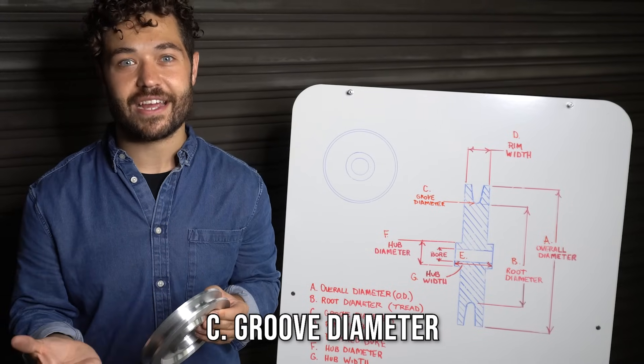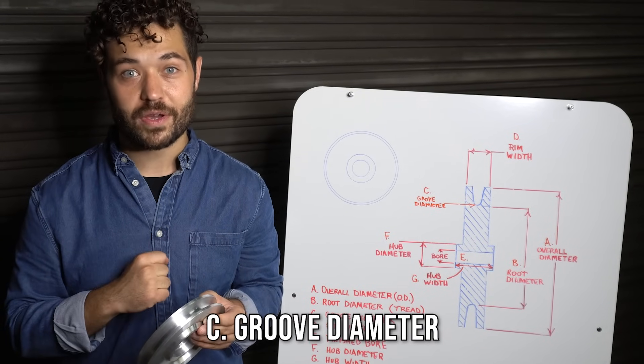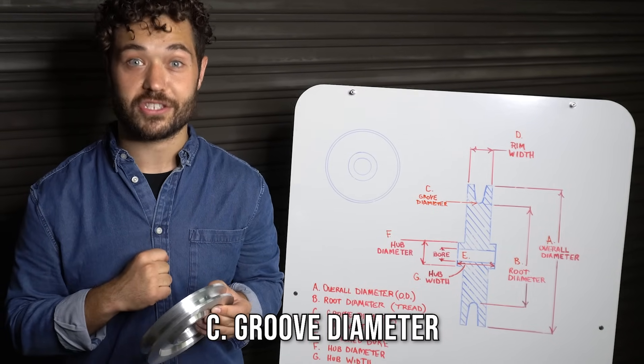The groove diameter is based on the diameter of the rope. It also can be measured on the shiv using a shiv gauge.